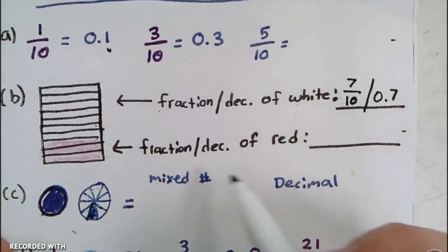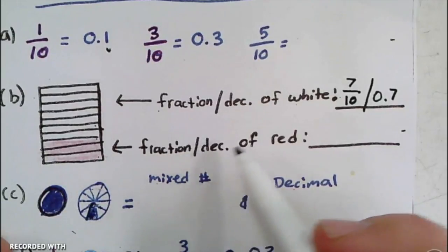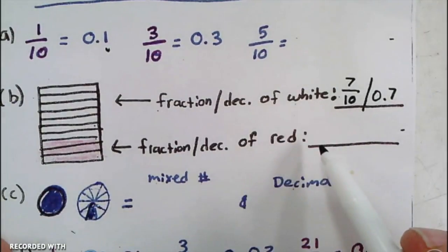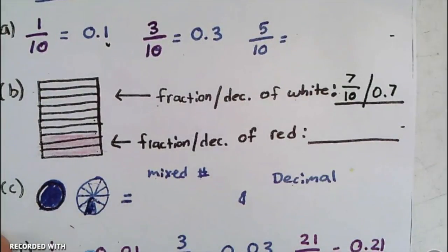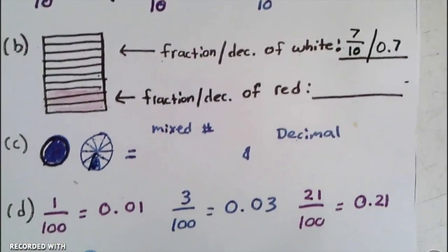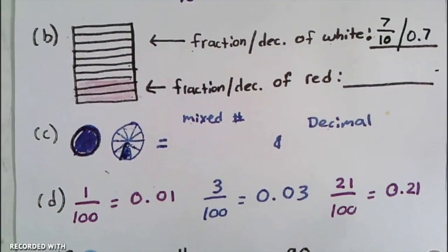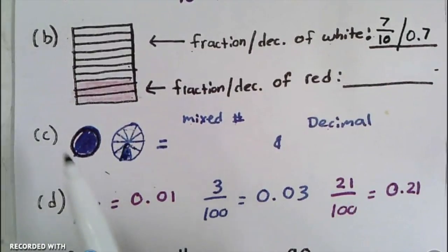Go ahead and try the fraction and decimal of the red ones. It's the same picture, so it'll have the same whole amount of parts. Count up how many red ones there are and then write that as a decimal. Another type of problem you might see would be using pictures, so here